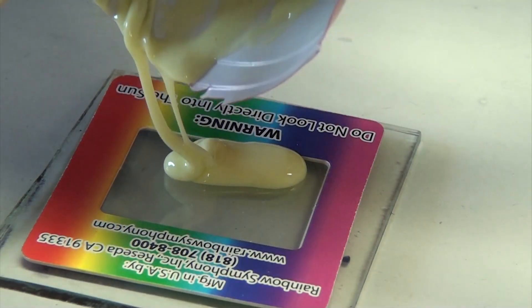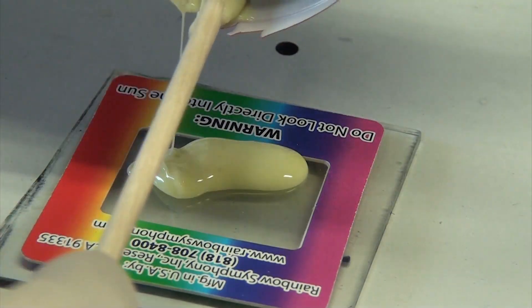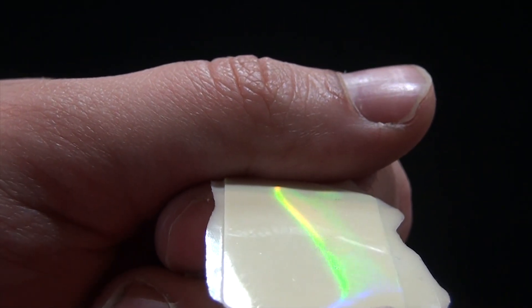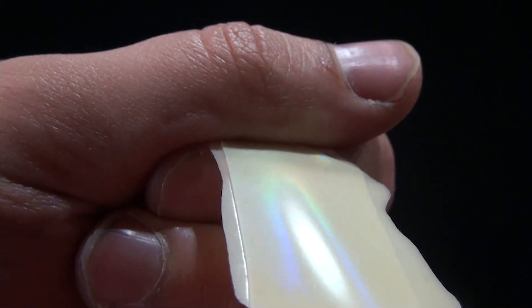We've used diffraction gratings many times on this channel, and so I had a stockpile of them left over. After mixing up some more silicone and casting it on the grating, the results were spectacular. The silicone had clearly taken the pattern because now when you tip it at the right angle, the surface is a brilliant rainbow.